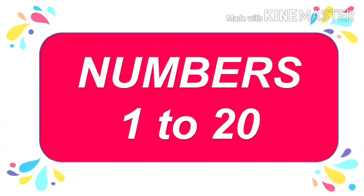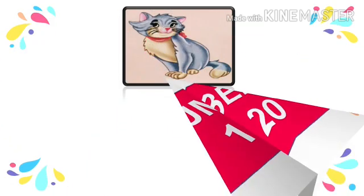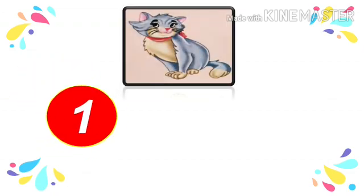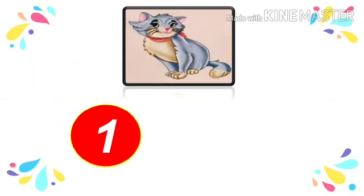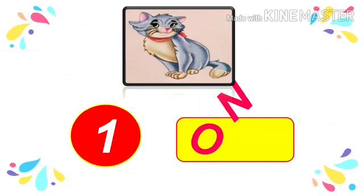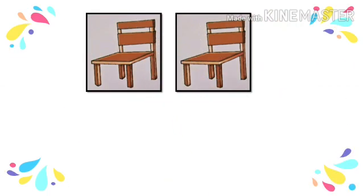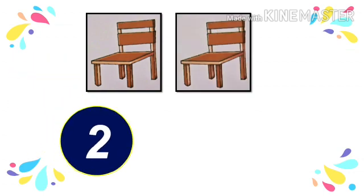Are you ready for counting? Let's start. Count the number of cats you can see. Count with me: 1. There is only one cat. O-N-E, 1. Count the number of chairs. Yes, 1, 2. There are two chairs. T-W-O, 2.